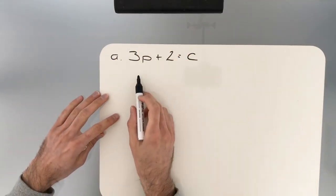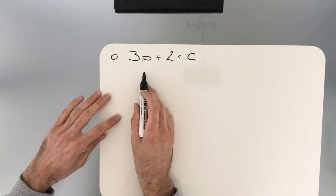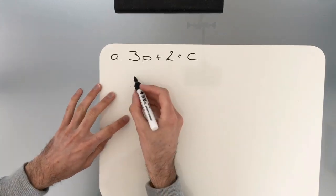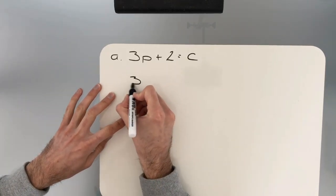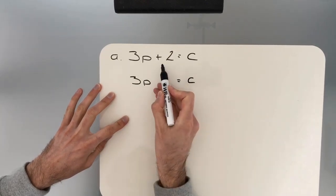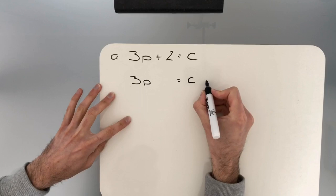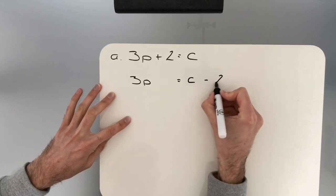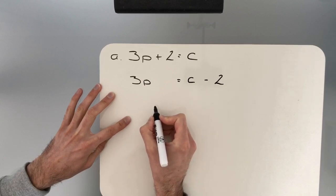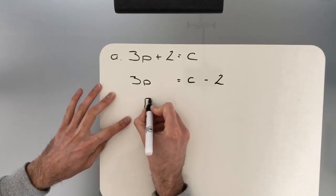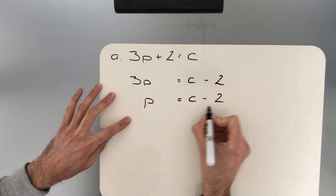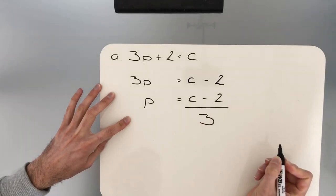In the question here we're looking to change the subject of the formula to the letter P. The aim is to leave the letter P on its own. If we leave this as 3P is equal to C, the positive 2 on the opposite side will come over to do the opposite operation and will become subtract 2. Now, the 3 is multiplying the P. So when we take it over we do the opposite operation. So it becomes P is equal to C subtract 2 all divided by 3.